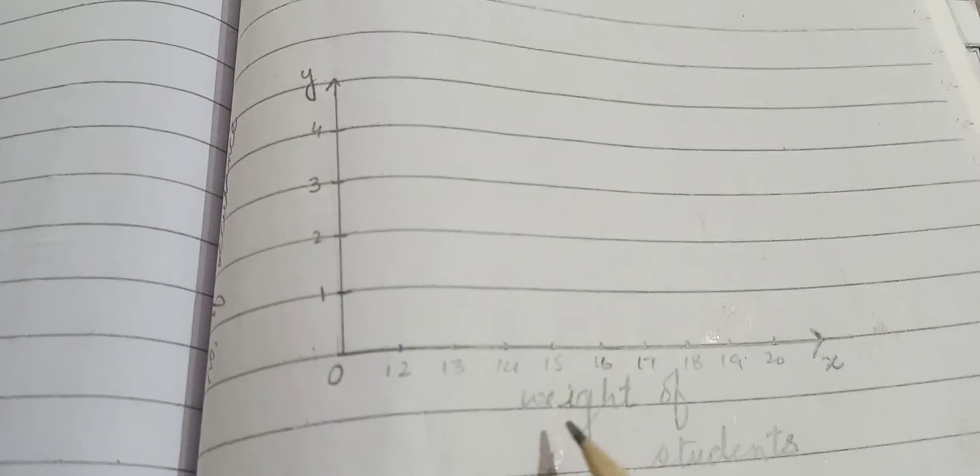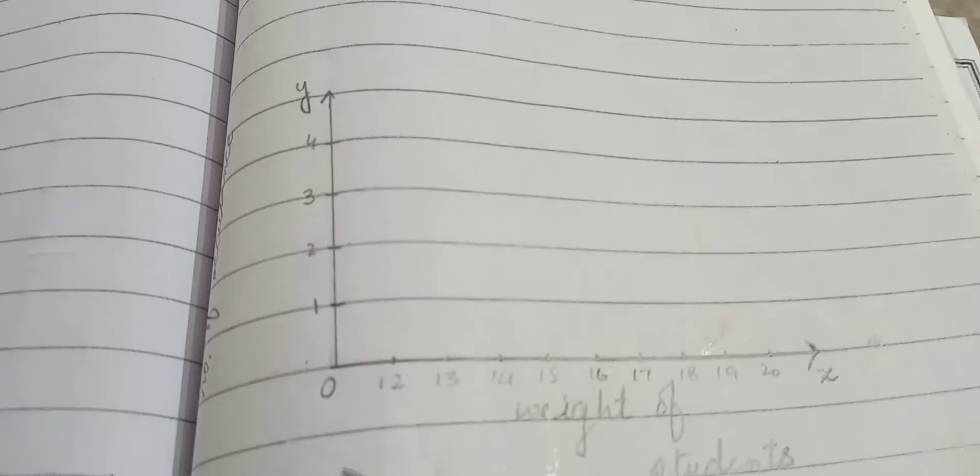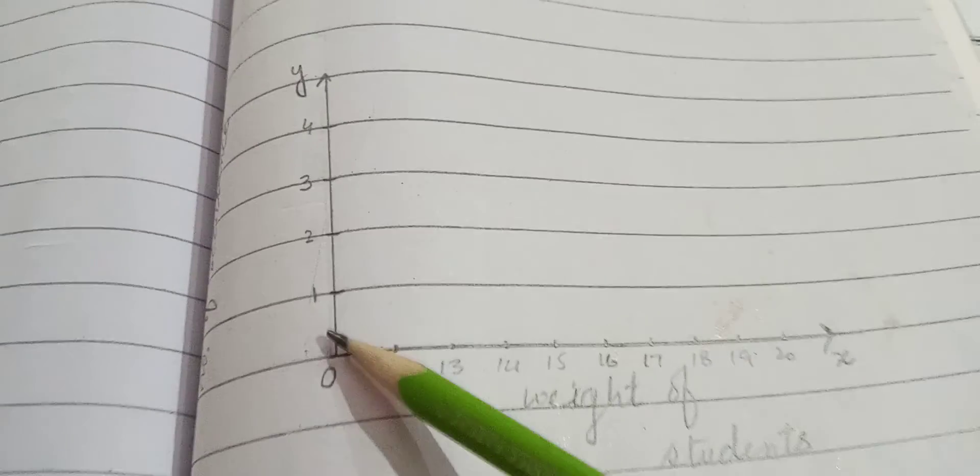We have to draw the bar graph, the vertical bar graph. Which is the vertical bar graph? Y-axis. What is the vertical axis?